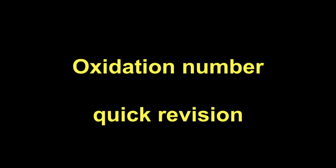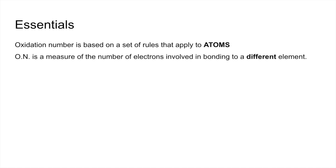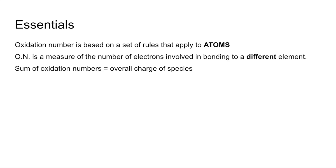Quick revision video on oxidation number. We'll start with the essentials. Oxidation number is based on a set of rules that apply to atoms. It is a measure of the number of electrons involved in bonding to a different element. The sum of oxidation numbers is equal to the overall charge of the species.